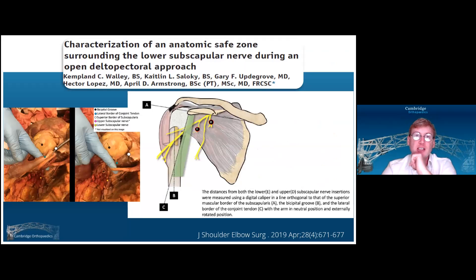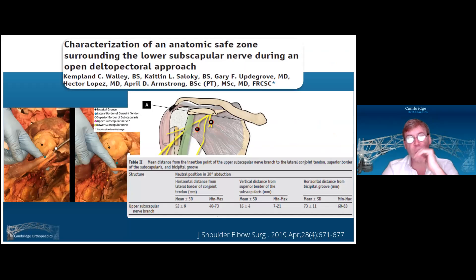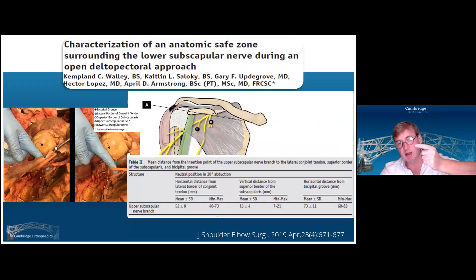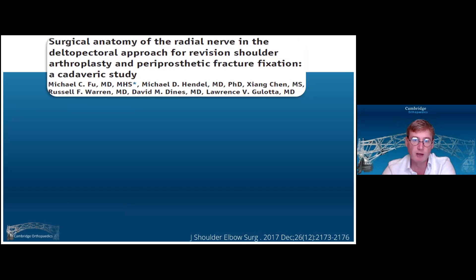An uncommonly injured nerve, but if you're not careful you can injure it, is the lower subscapular nerve. It sits about five to six centimeters medial to the lateral border of the short head of biceps. You can injure that when you're sweeping under the conjoint tendon to go find the axillary nerve. So don't go too far medially — it generally sits around five centimeters medial to the lateral border.